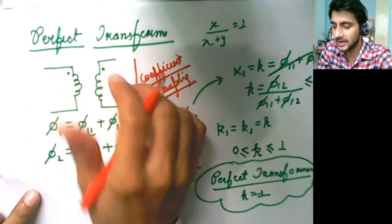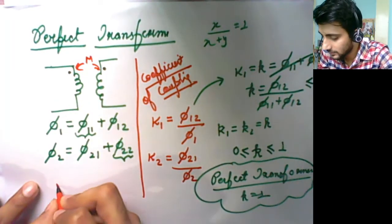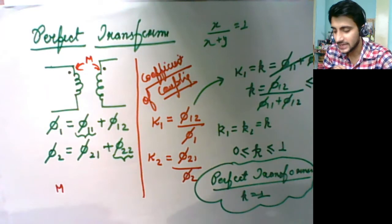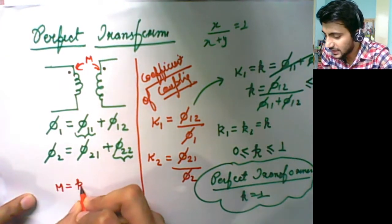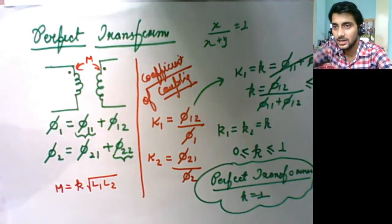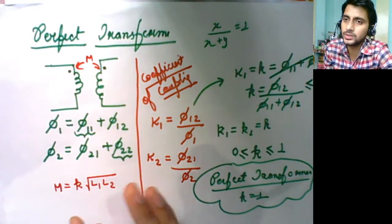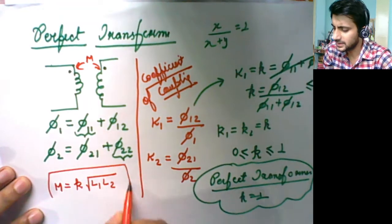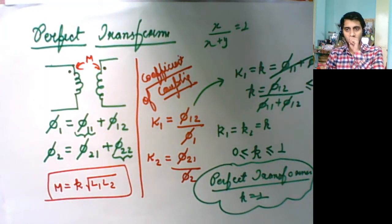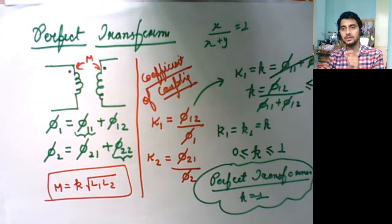The mutual inductance M between the two coils is experimentally and practically defined as M = k × √(L1·L2), that is, k times the geometric mean of the self-inductances. You need to remember this. So in transformers, the mutual inductance equals k times the geometric mean of the self-inductances of both coils.